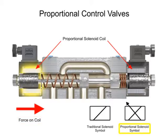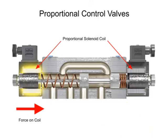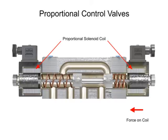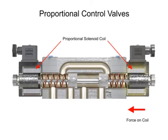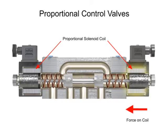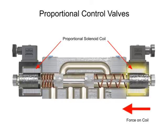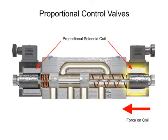The graphic symbol for this type of solenoid is a slash in the operator box with a sloping arrow through the slash. With proportional valves, the spool can be shifted against the centering spring force to any distance up to full shift by varying voltage and current.